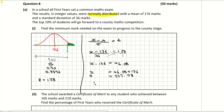Now the minimum mark is going to be rounded up. So the minimum mark that you need to receive is 223 marks. Because if I got 222 marks, I'm still going to be below that 10% that I need. So 223 is the minimum mark needed to progress.